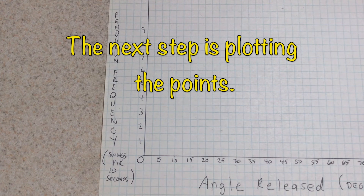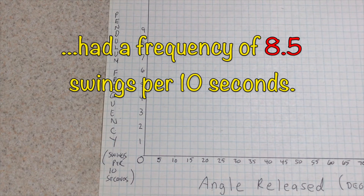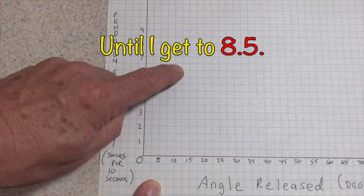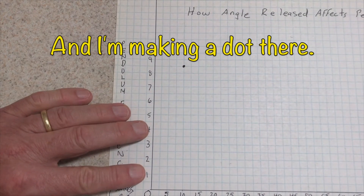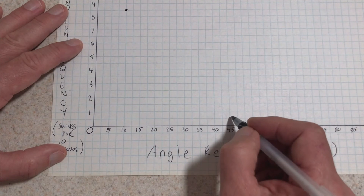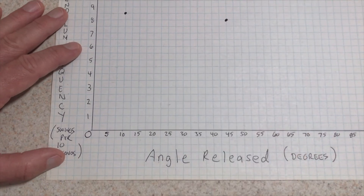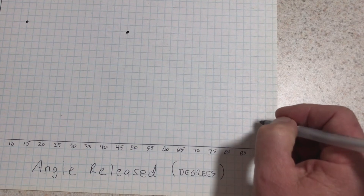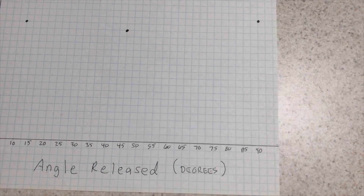The next step is plotting the points. The first point was a ten-degree angle with an average frequency of 8.5 swings in ten seconds. So I'm going up the ten-degree line until I get to 8.5, halfway between 8 and 9, and making a dot there. Next, at 45 degrees the average frequency was 8 swings, so I go to 45 up to 8 and make a point. The last value, 90 degrees, had an average frequency of 9 swings, so I go up the 90 to 9 and plot a point.